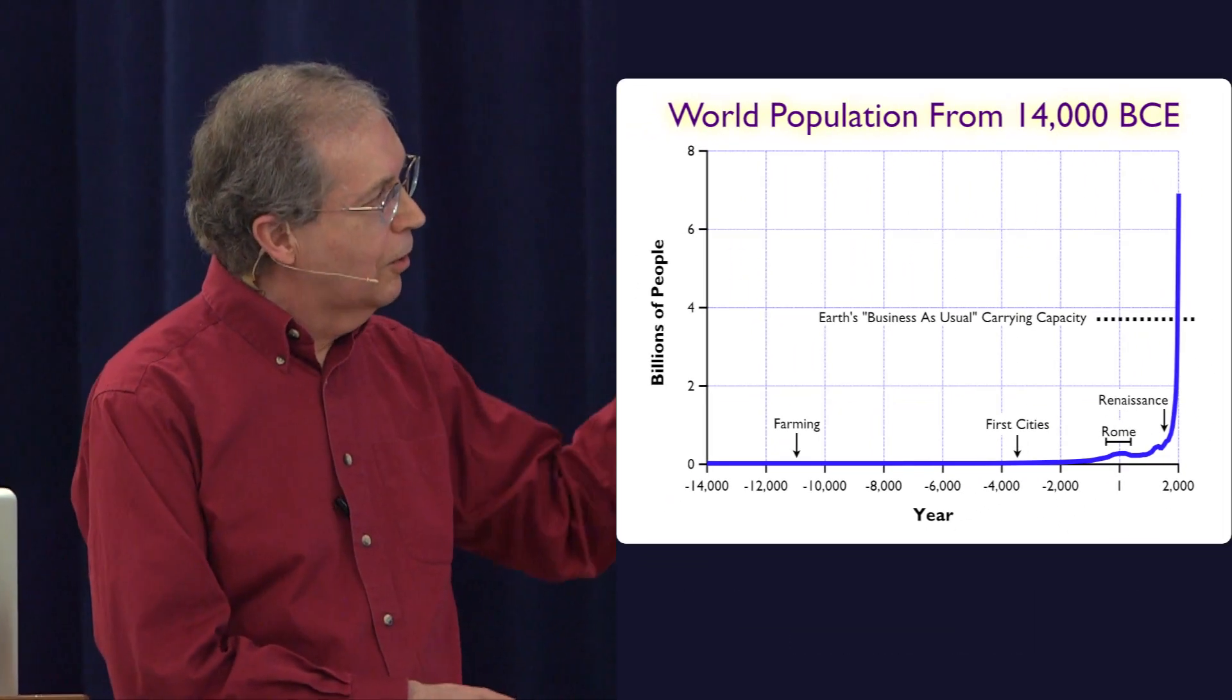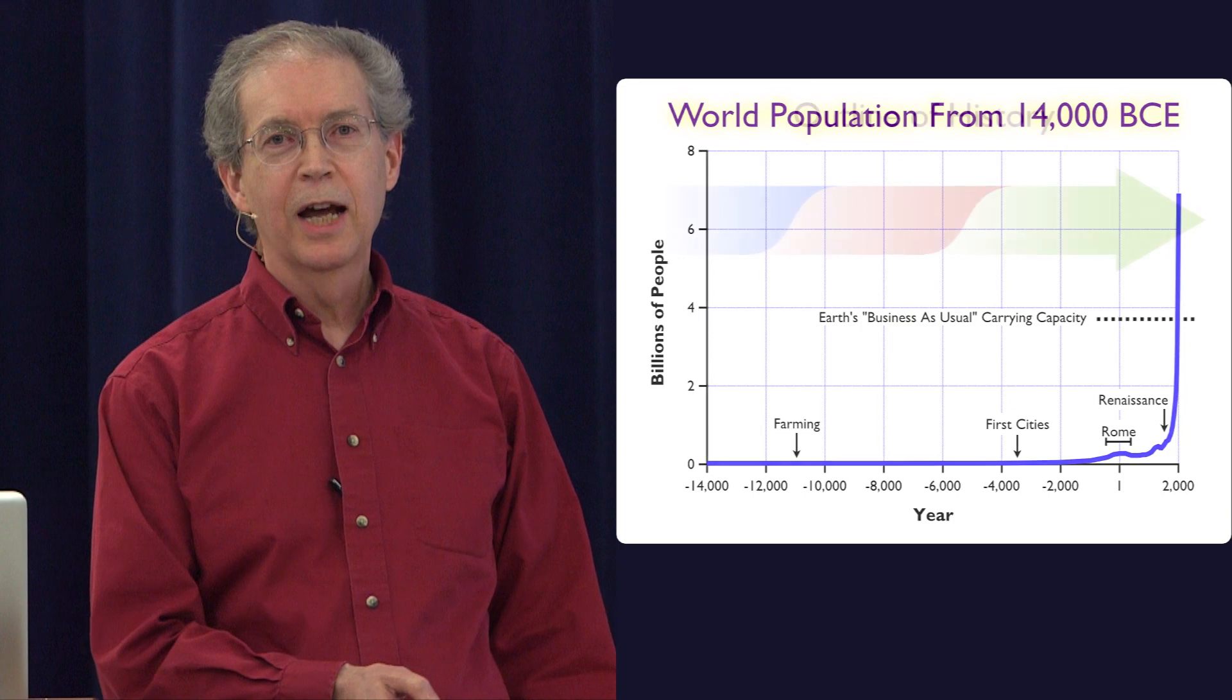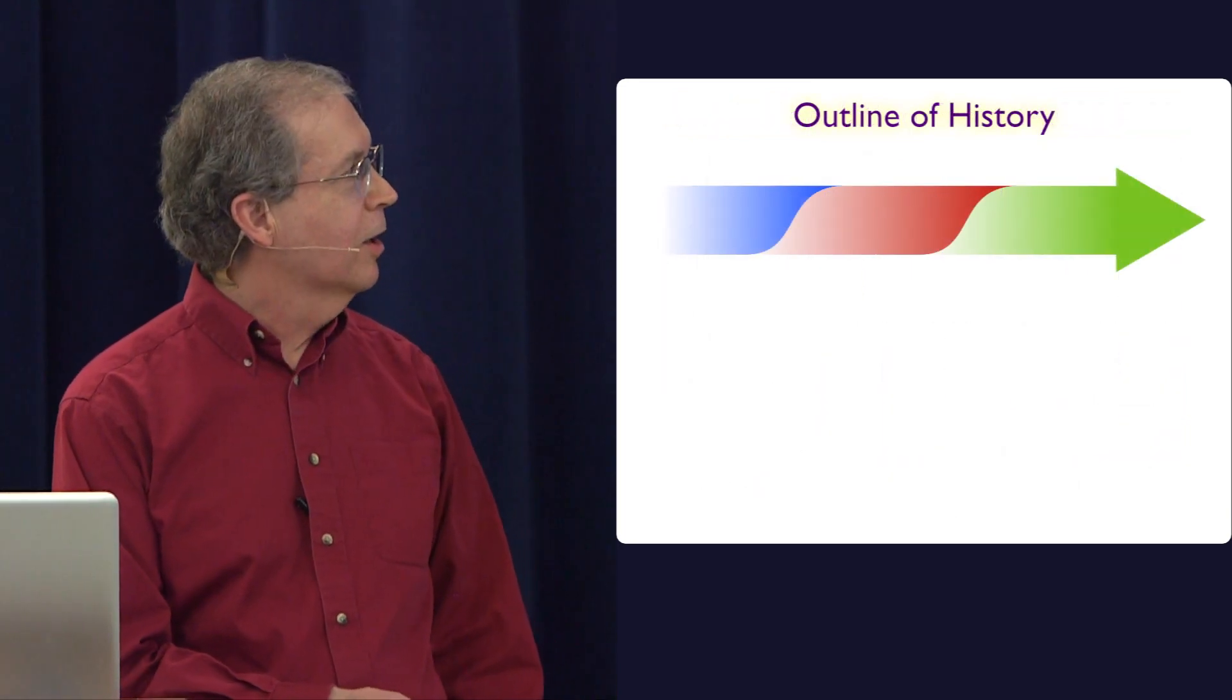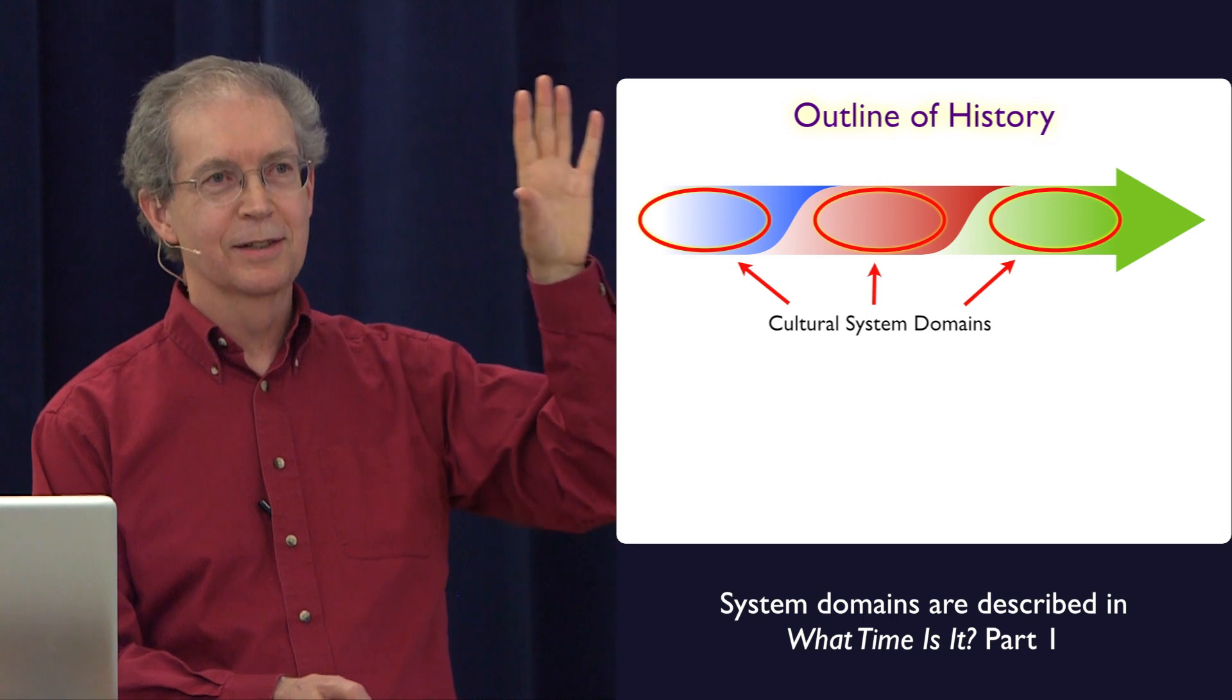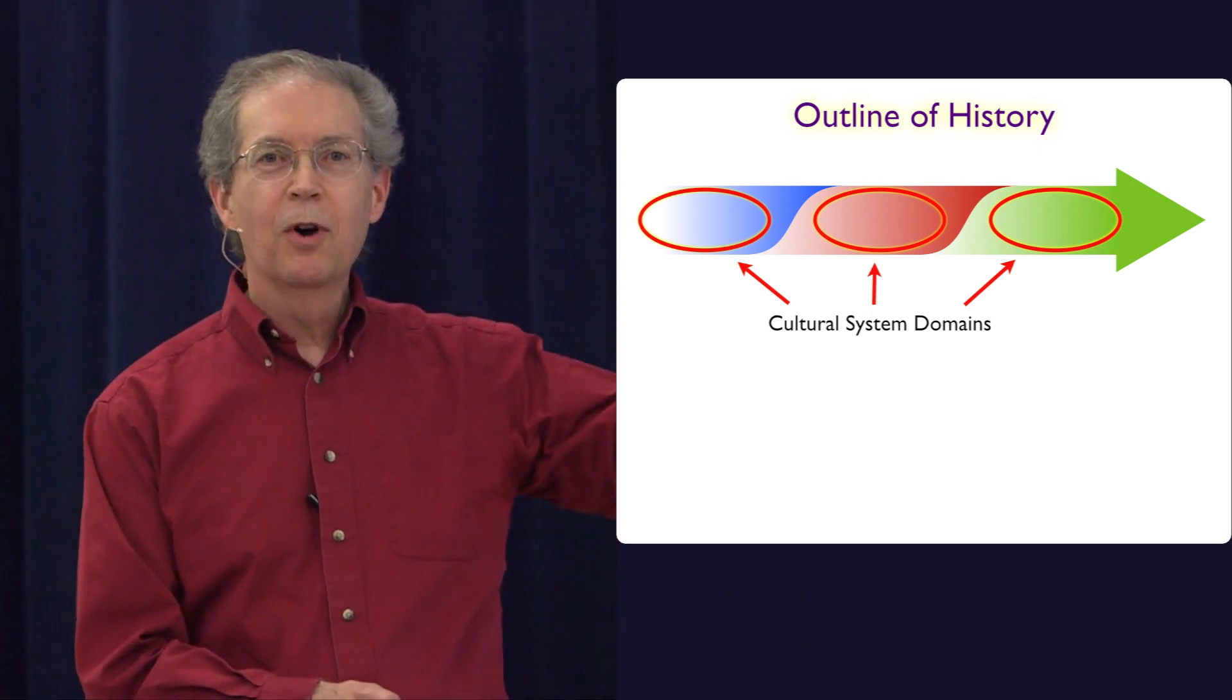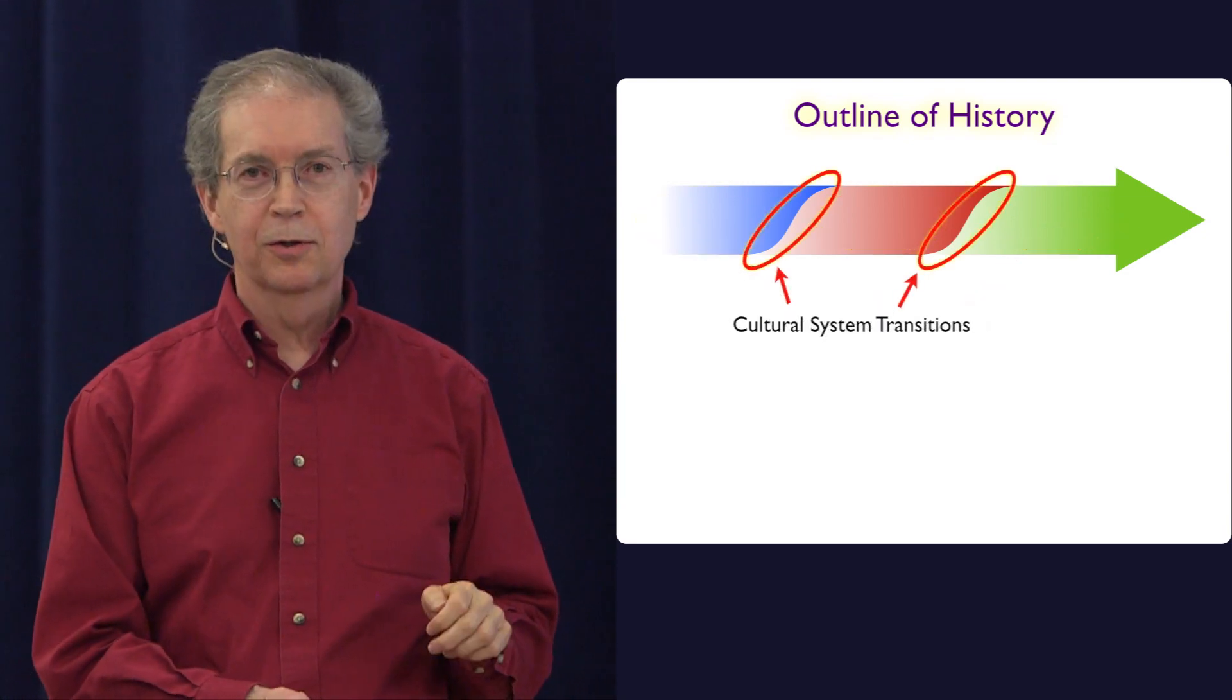So, in looking over all of this history, one of the things that I found to be really helpful is something I call the outline of history, that's made up of three cultural system domains. This is why I had to talk about water and ice and steam.